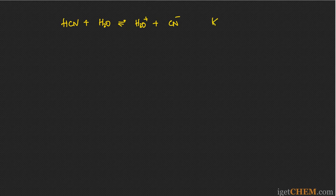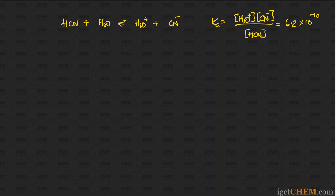The Ka value is equal to the H3O plus concentration multiplied by the CN minus concentration divided by the concentration of HCN, and the Ka value for that is equal to 6.2 times 10 to the minus 10. Ka values in different books are just slightly different, so yours might be a little different from that, but magnitude wise it should be about the same.